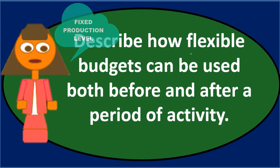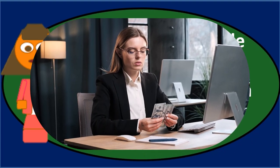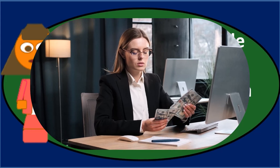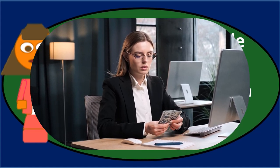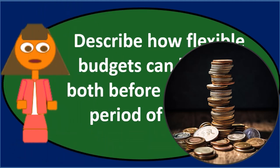After the period is over, we can use the flexible budget contribution margin format again. At the end of the process, we will know how much was actually produced. We can then make a comparison — not based on the fixed budget, because it has a different level of production and the comparison won't be as useful. By flexing the budget to the actual level of production, we can compare budgeted numbers to actual numbers on an apples-to-apples basis. The differences will then be more meaningful, and we can break them down further using various variance analyses.